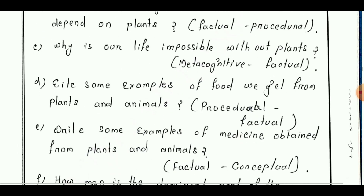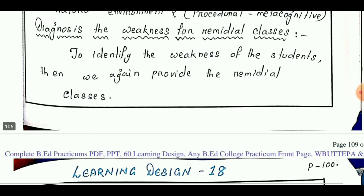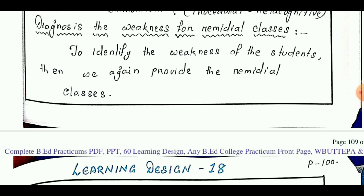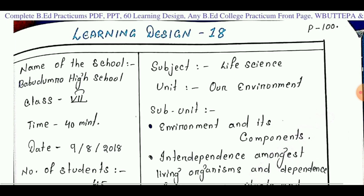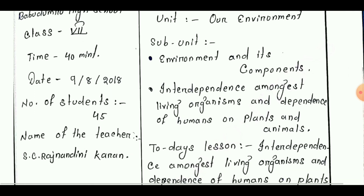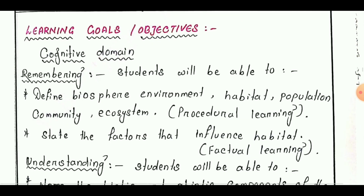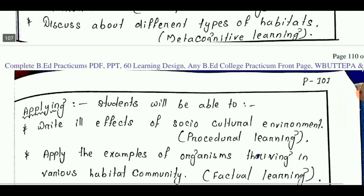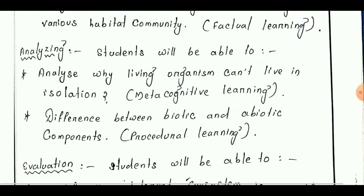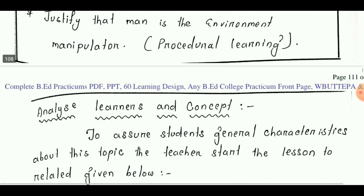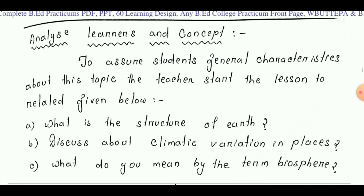The last point is diagnosing the weakness for remedial class. Learning design number 18 is taken from Class 7. The lesson is 'Interdependence amongst Living Organisms and Dependence of Human on Plants and Animals.' Learning goals are: remembering, understanding, applying, analyzing, evaluating, and creating.